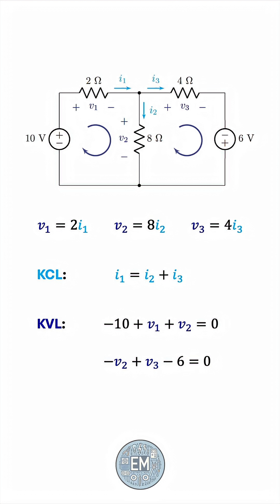Let's take the negative 10 to the other side in this first equation. And we can also do the same thing for the second one. We'll take the negative 6 to the other side. And now we'll use the Ohm's law equations to express the three voltages in terms of their currents. V1 is 2I1, V2 is 8I2, and V3 is 4I3.